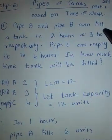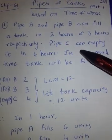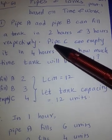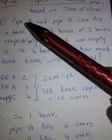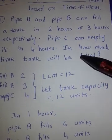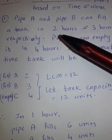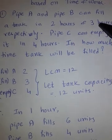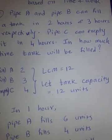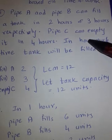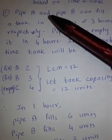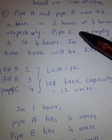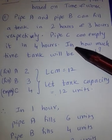Pipe A and Pipe B can fill a tank in 2 hours and 3 hours respectively. Pipe C can empty it in 4 hours. In how much time will the tank be filled? The similarity with time and work: Pipe A fills the tank in 2 hours and Pipe B in 3 hours — same as A and B finishing work in 2 and 3 hours. The difference is Pipe C, which empties the tank — the opposite action of filling. That is the only difference between time and work problems and pipe and tank problems.